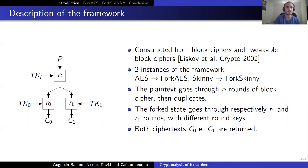The plaintext goes through RI rounds of block cipher, then the state is duplicated and it goes into R0 rounds of block ciphers to output C0 and R1 rounds of block ciphers to output C1.